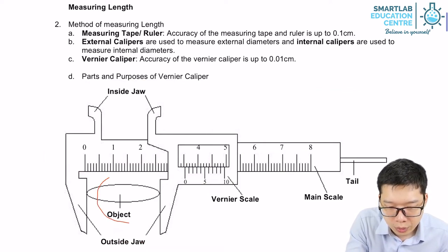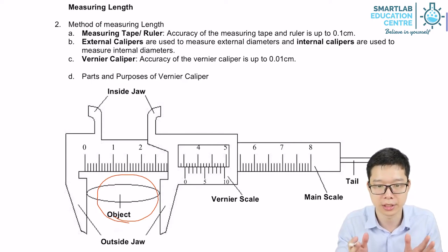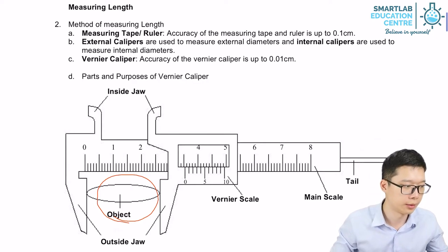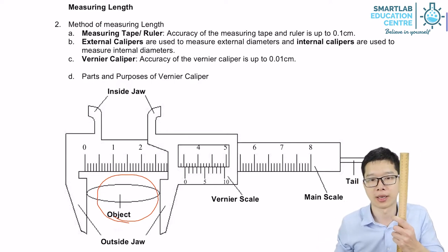Similarly, we just clip our item here. If we're going to measure the external dimension, for example, let's measure the thickness of my half meter rule.